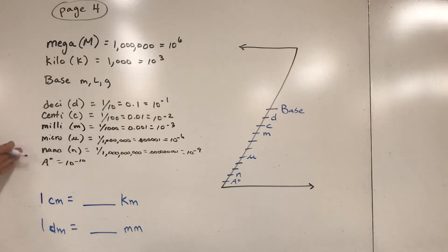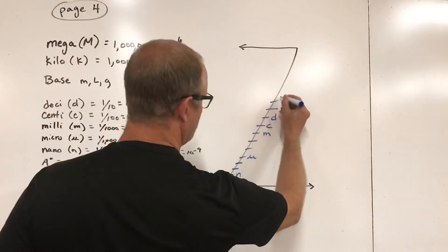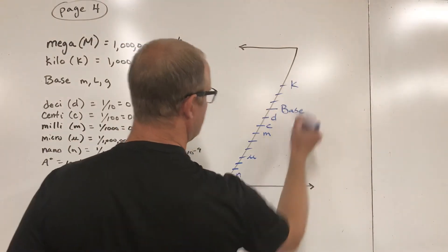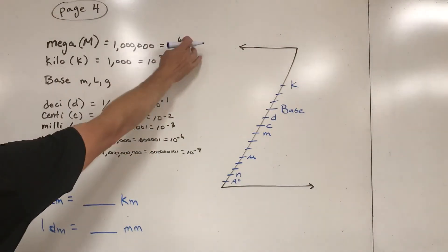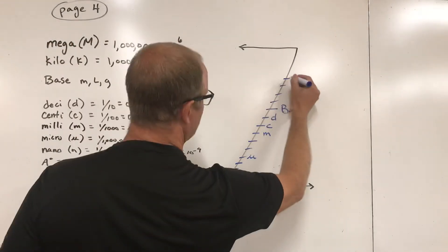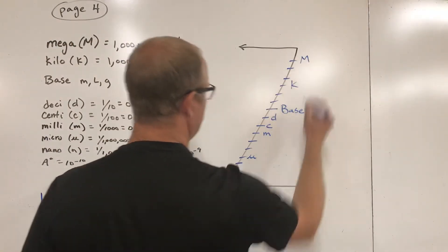These are the ones they list and you're going to be asked to deal with. Now let's go above the base unit. Kilo is bigger than that but it's not one step, it's three steps up. It's a thousand times bigger, so we go one, two, three. Then we got three more steps: mega. One, two, three. That's capital M.